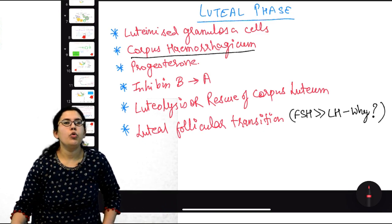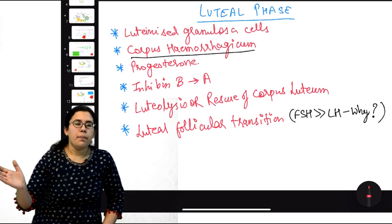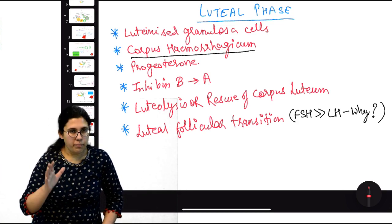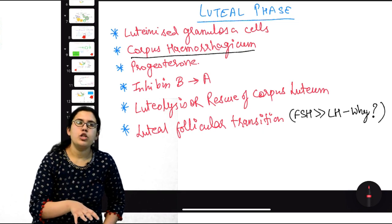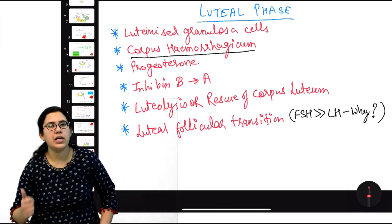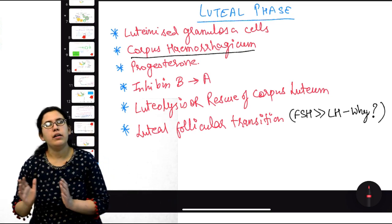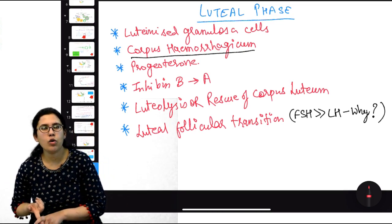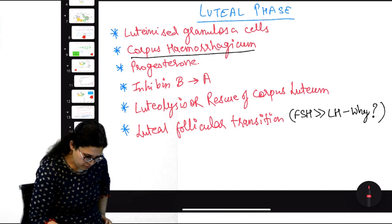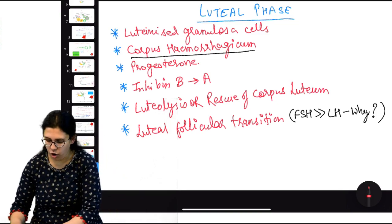Rescue of corpus luteum continues until 10 to 12 weeks of gestation. After that, the placenta forms and takes over hormonal production from the corpus luteum — this is called the uteroplacental shift.